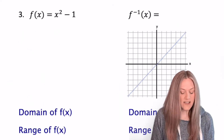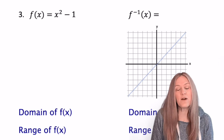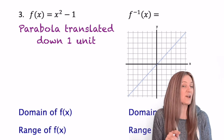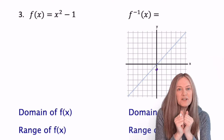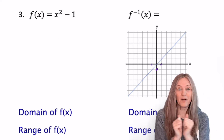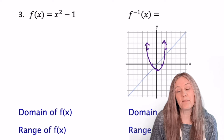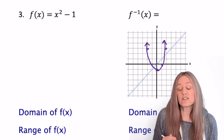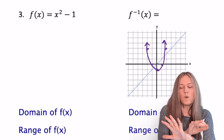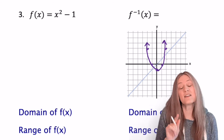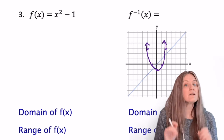Example three: f of x equals x squared minus one. It's just a parabola that's been translated down one unit. Let's graph. From the vertex, over one up one; from the vertex, over two up four. There's our parabola. Now we know to graph the inverse I could take the five points and just swap x and y and graph. But let's go ahead and algebraically find the inverse of this function. Let's switch x and y.